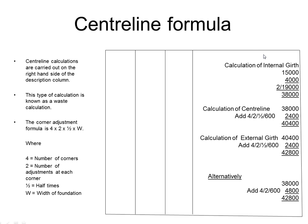Using the centre line formula itself, we will always work on the left-hand side of the description column — the right-hand side is known as a waste calculation. We use the corner adjustment formula, also known as the centre line formula: four times two times a half times w, where four is the number of corners, two is the number of adjustments at each corner, and a half times w is half the width of the foundation or the thickness of the medium we are passing through. So as we said earlier, 38,000 is our internal girth. We add the centre line calculation — four times two times a half times w, which is 600 — to give us a total of 40.4 metres.